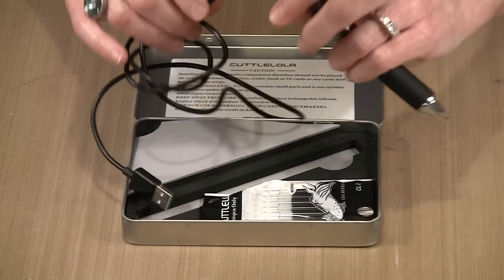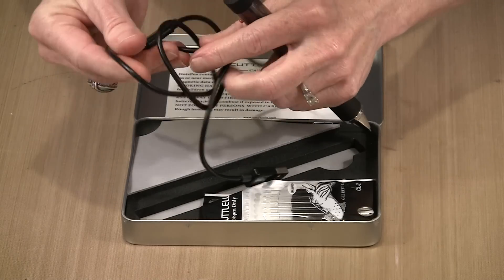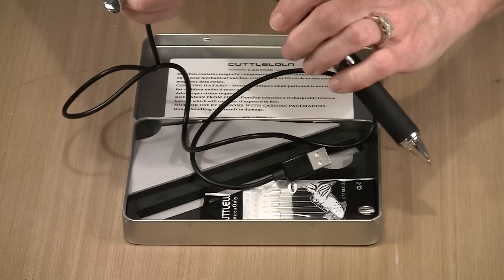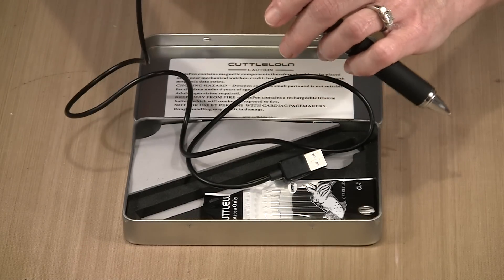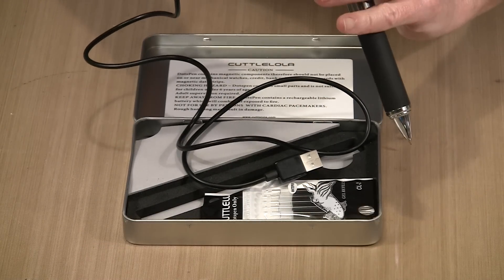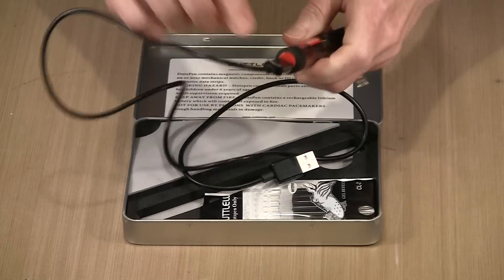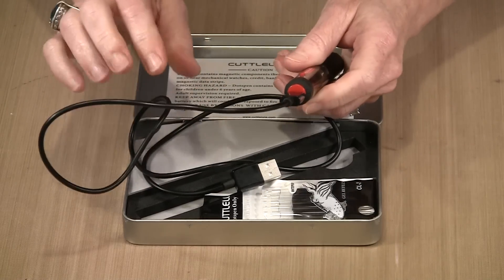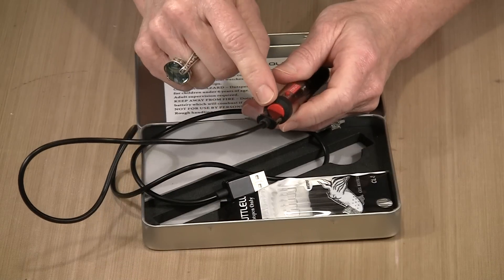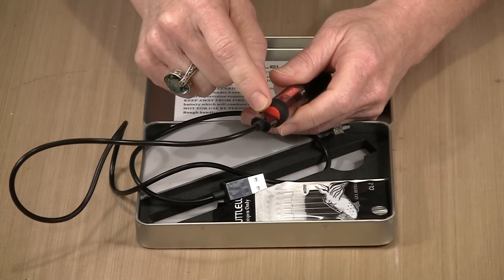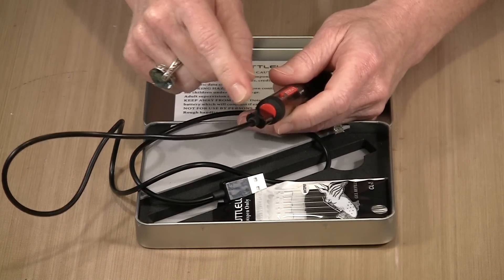You'll plug that in there, and then you're going to plug the micro end into the top of the pen. Now this is not lit at the moment because this is not actually plugged into any power supply. But when it is plugged in, this will light up as it's charging, and when it's fully charged, the light will go off.